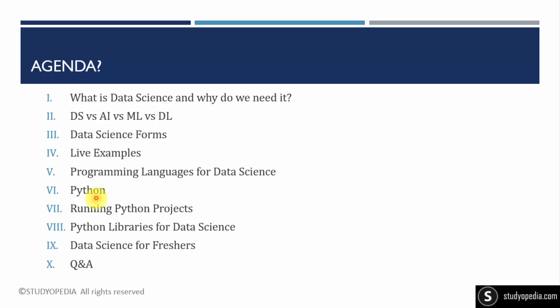For the roadmap, we will also cover how you can run your Python projects easily. We'll understand the basic libraries for data science — which four Python libraries you can begin with to start your data science journey. We'll also understand data science for freshers and its roles, as well as for experienced professionals. After that, you can ask me questions in the comment section.